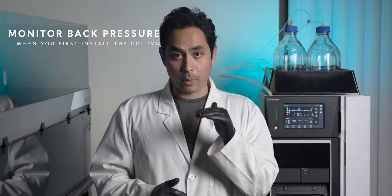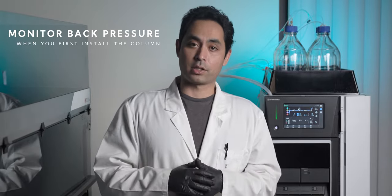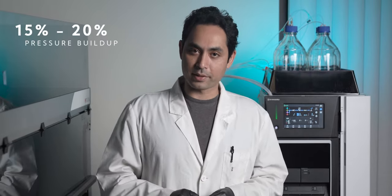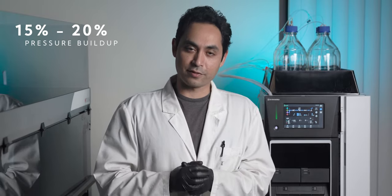The way that you know it's time to do a deeper cleaning is to monitor your pressure buildup on your column. Always note the back pressure when you first install the column so you have a baseline. If you notice your pressure kick up around 15 to 20% it's a good idea to do the reverse flush.